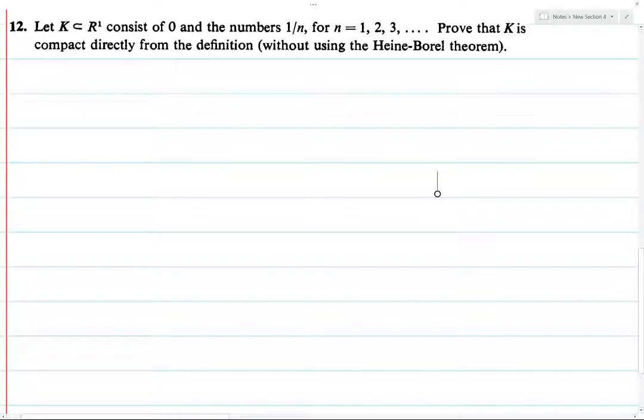So infinitely many of those things will be contained in this open interval, and then you've only got finitely many points of K remaining, and so you could just deal with those with finitely many other of the open sets. And that way you've got your finite subcover. So that's it. So now let's put that into words.